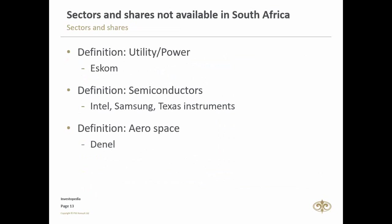Then there's aerospace. Denel is a company not listed in South Africa — it's really the only company we have that would fit into an aerospace index. In the US you have quite a few: Boeing, and Textron, which is the maker of Cessna and Beechcraft jets as well as Bell helicopters.